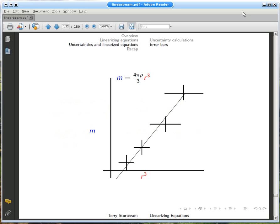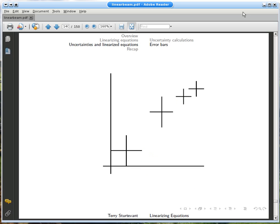In one case, the uncertainties get bigger as the data values get bigger. In the other case, the uncertainties get smaller as the data values get bigger.